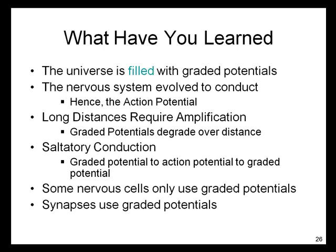So, what you have learned from this screencast: the universe is filled with graded potentials. The nervous system evolved to conduct information in the form of voltage — this is the reason the action potential was favored by evolution. Conduction over long distances requires amplification. Graded potentials degrade over distance. The action potential is conducted fastest by saltatory conduction, which uses electrotonic conduction — a process where a graded potential travels very quickly downstream to a point where it can create a new action potential, reamplifying the signal, then electrotonically transmits further as another graded potential to the next point where an action potential can occur. Some cells of the nervous system use only graded potentials, for example receptor cells in the retina, and synapses also use graded potentials to integrate information arriving from multiple inputs. Thank you for listening.